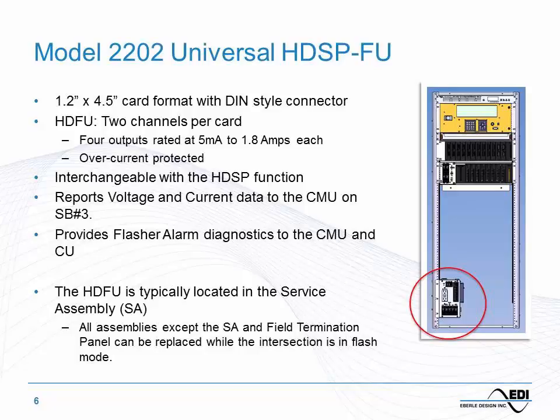There are two channels per flasher card, similar to the load switch. You can pull the flasher card out, plug it into the output assembly as a load switch, and likewise — so we don't need to carry an inventory of separate flashers, just one device. An important safety issue was flasher alarm diagnostics. Today there are many cabinets on the street where the flasher is damaged or not working correctly and nobody knows it. In this cabinet, if a flasher output fails, the CMU will detect that and generate an alarm to the controller stating there's a maintenance issue with the flasher.